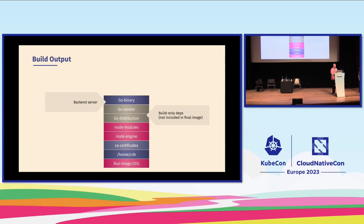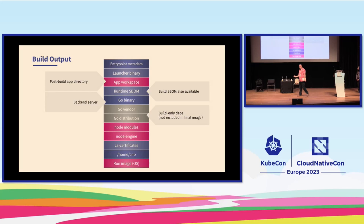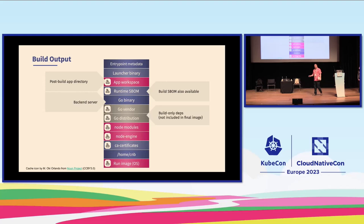Using buildpacks, you get a pretty complete software bill of materials. Caching is also built in: the byte-for-byte reproducibility on layers means we can cache most of them. When you rebuild, if a layer hasn't changed — for example, you're using the same node engine — we just pull that layer from the registry without rebuilding it. There are a lot of efficiencies built in.